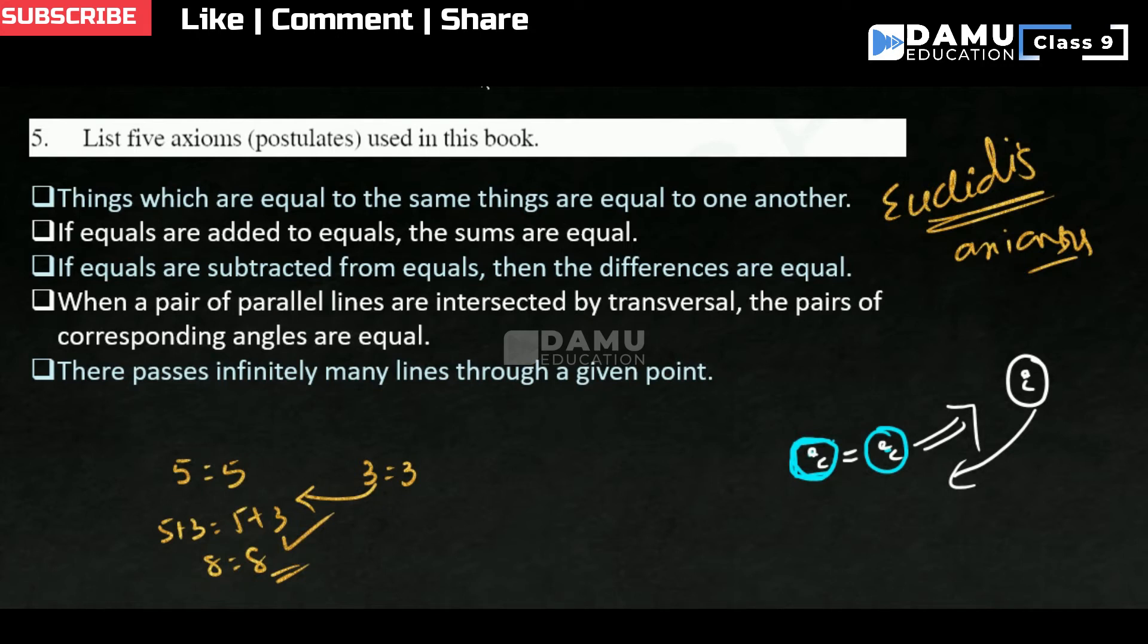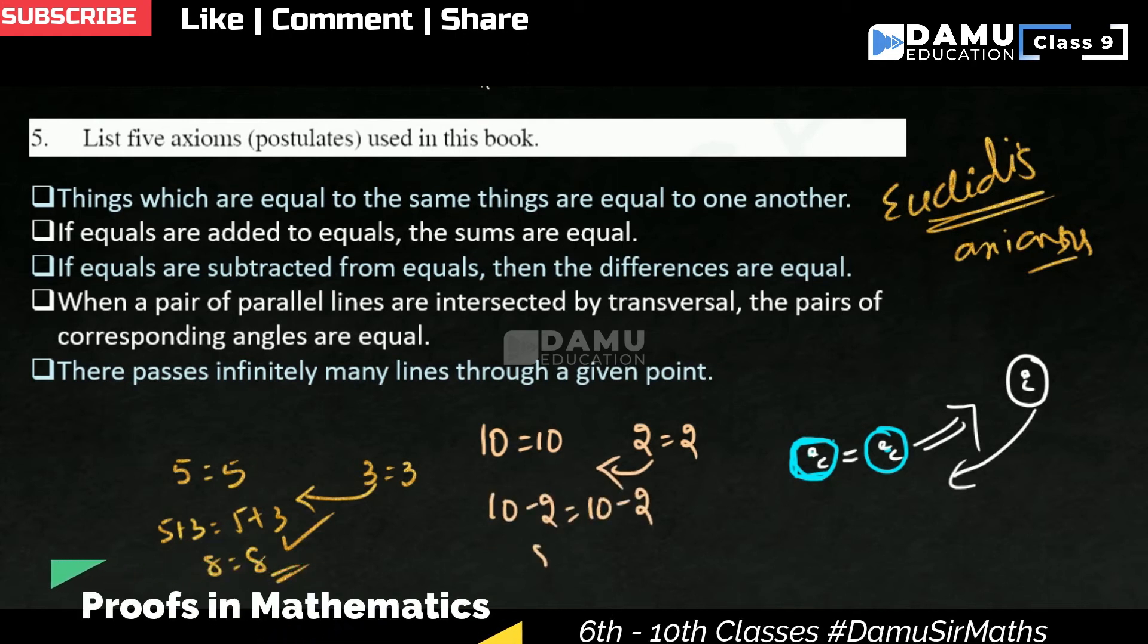If equals are subtracted from equals, then the differences are also equal. Let us take 10 equals 10 and 2 equals 2. If we subtract 2 from 10 on both the right side and left side, what do you get? 8 and 8. The differences are also equal.